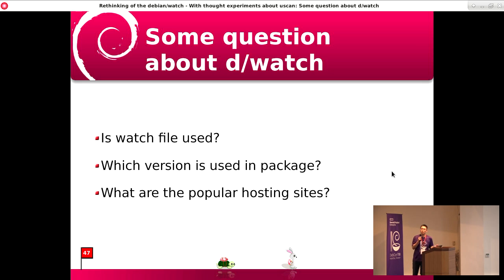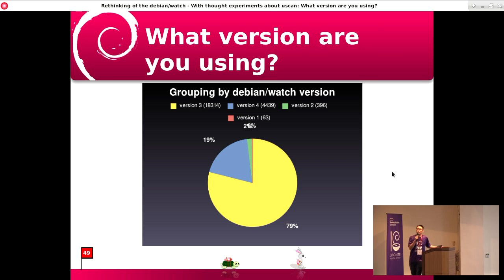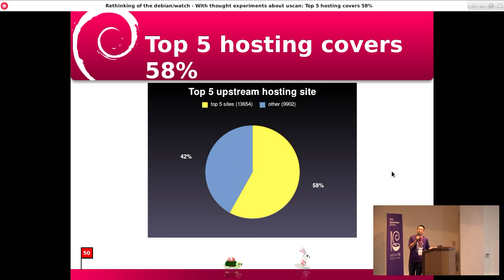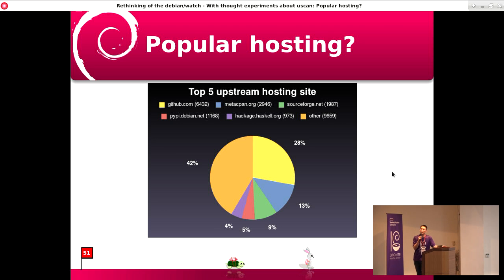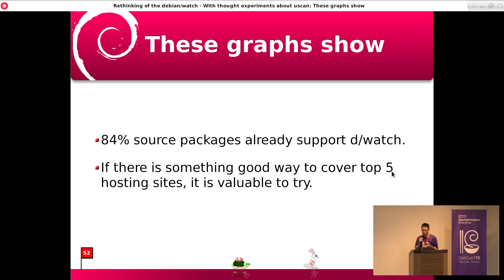The questions are: how many packages are using Debian Watch file, or which version is used, or what are the popular hosting sites? The answers are: 84% of packages use a Debian Watch file, and version three watch file is most frequently used, next is version four. The top hosting site covers 58%. The detail is: most used is GitHub, and the C-Band source port, and the directory for PyPI and Hackage are the top. So 84% of packages are already supporting it, so if there's a good way to improve it, it's valuable to try.